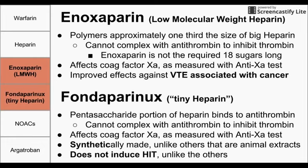The next drug is fondaparinux, which I call tiny heparin. Tiny heparin is essentially just the five sugars required to bind to antithrombin. This smaller version cannot form a complex with antithrombin to inhibit thrombin, but it can activate antithrombin enough to affect coagulation factor Xa, and we use the anti-Xa test to measure that. Fondaparinux is synthetically made, whereas the other heparin molecules are produced from animal extracts, usually from the intestines of pigs or cows.